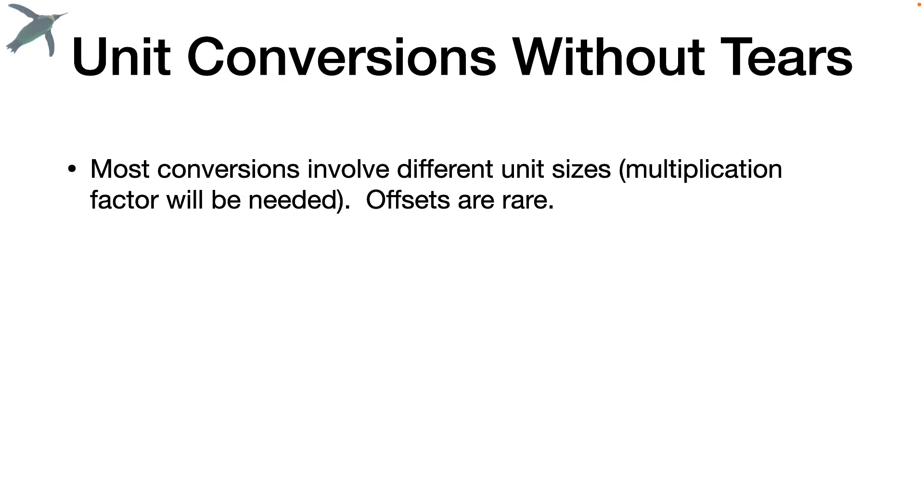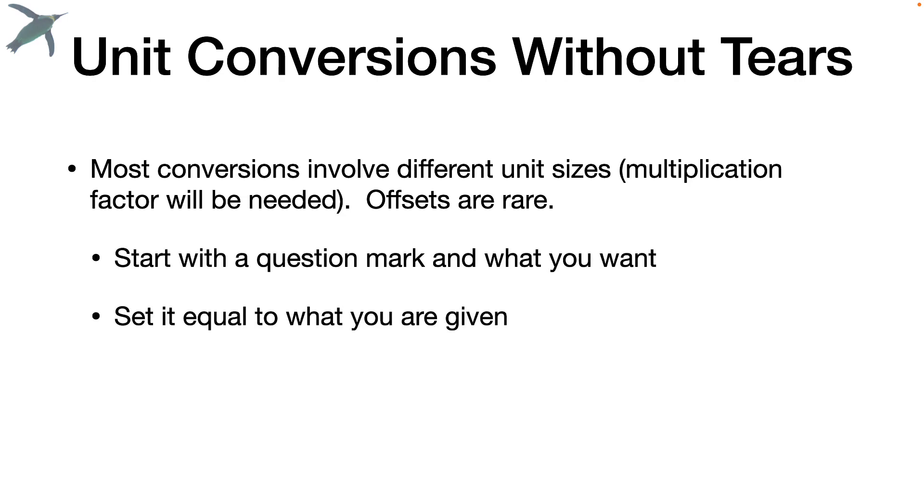Okay, so in summary, most conversions involve different size units. So you're going to be multiplying. Offsets are rare. You're going to start with a question mark and what you want. You're going to set it equal to what you are given. And you're going to transform the equality into a fraction to get rid of the units that you don't want.